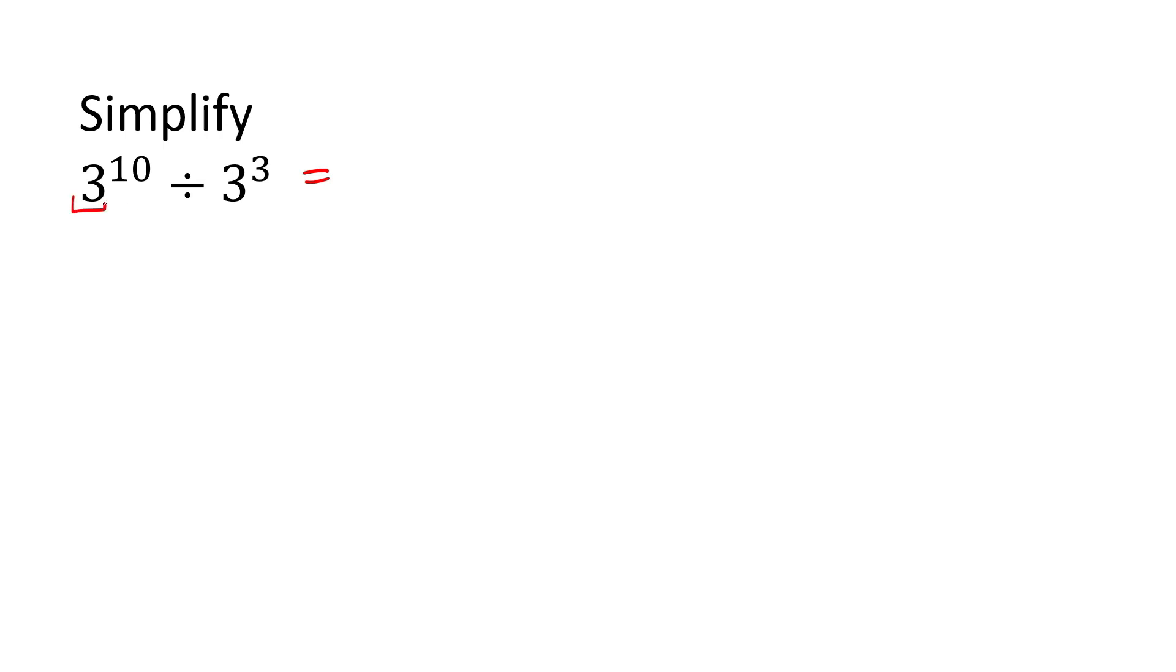When the base numbers are the same, leave them. What do we do with the exponents? Subtract them. So what is ten minus three? Seven.